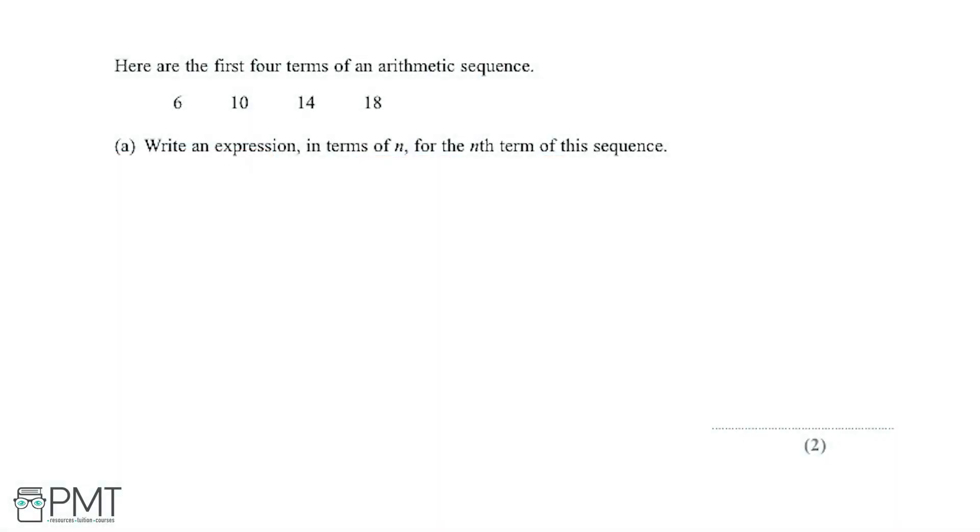Here are the first four terms of an arithmetic sequence: 6, 10, 14, and 18. Part A says we need to write an expression in terms of n for the nth term of this sequence, and this is for two marks.